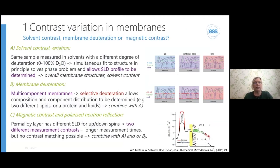There are three different ways in which we can do contrast variation for neutron reflectometry. The first two apply equally well to small angle scattering. The first, and most commonly used, is solvent contrast variation—we take exactly the same sample and measure it in solvents that are deuterated to different degrees. By doing so, we can basically solve the phase problem at least partially and determine the scattering length density profile of the sample, in this case a lipid membrane. Usually this gives overall structure—where the solvent is and where the hydration water is in relation to the membrane lipids.